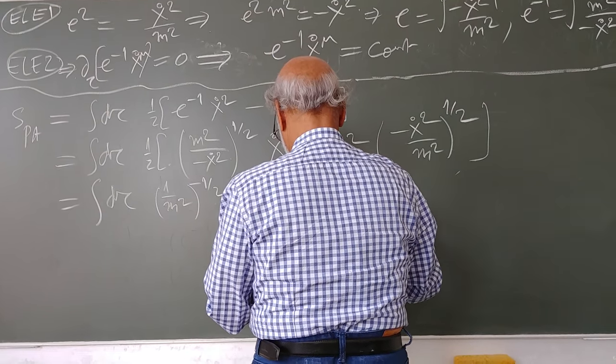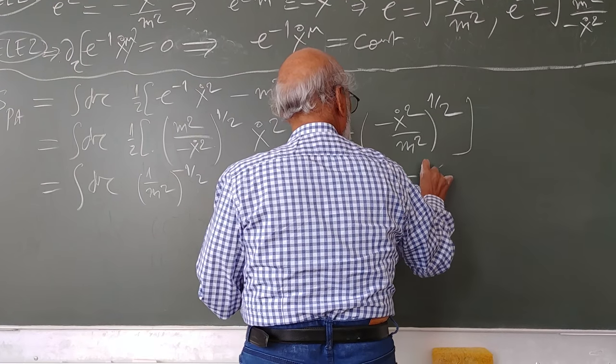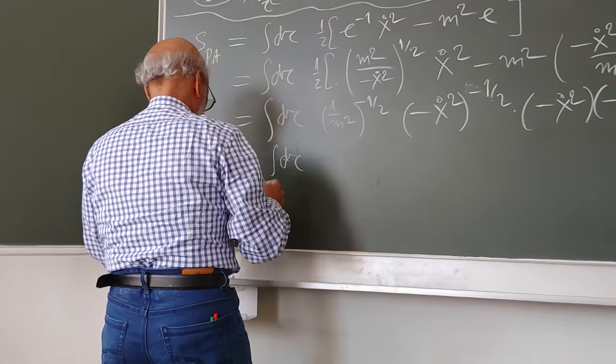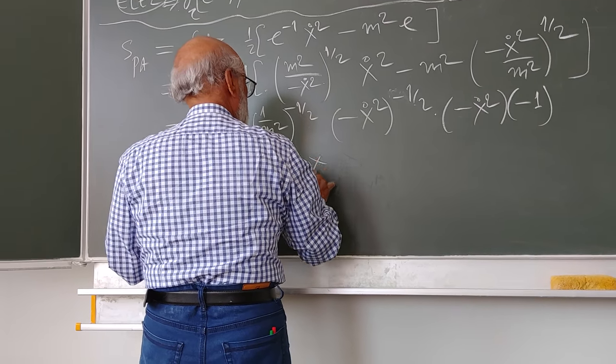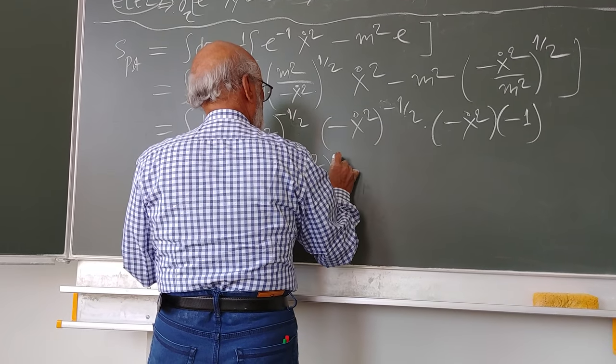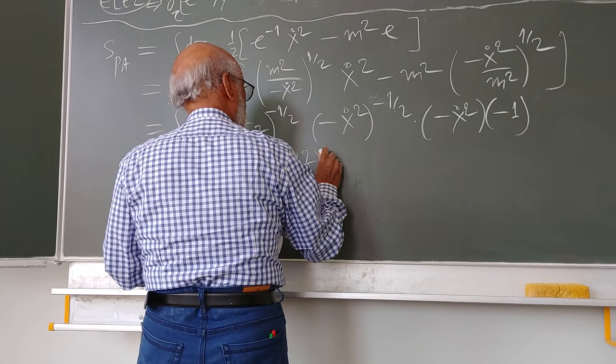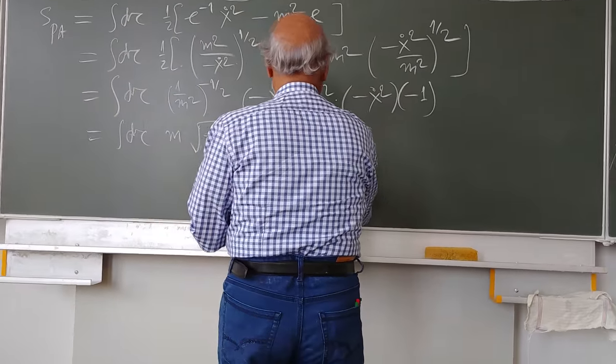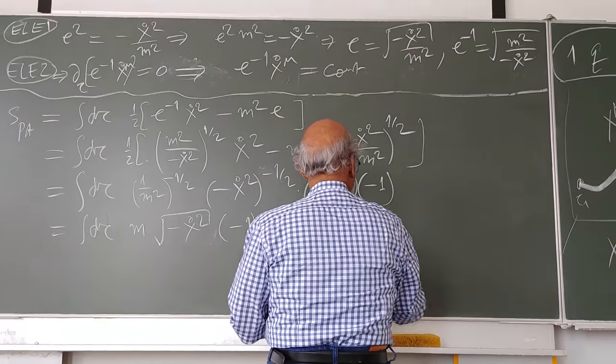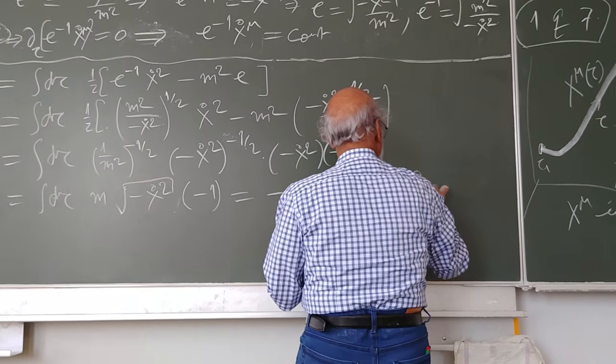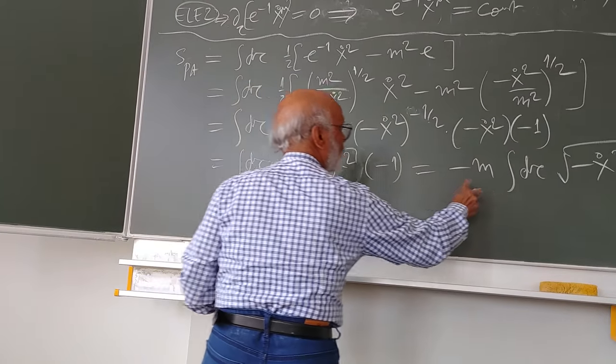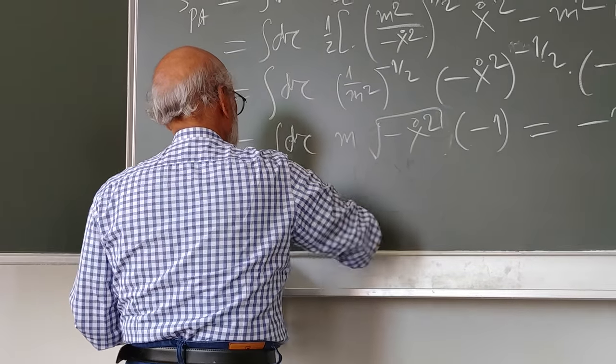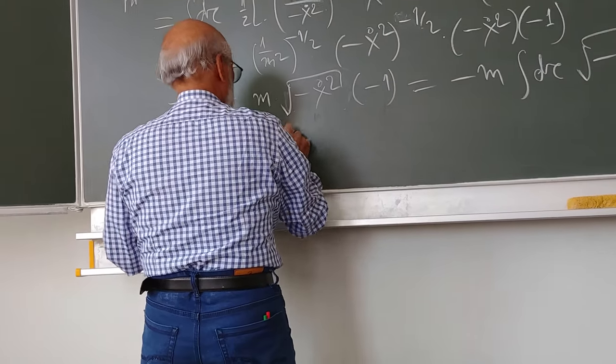I can add to this. I always use that. I put this. This can be written as d tau m times minus x dot e squared. If you like, I can already go to square root, one half into minus 1, so I can write it as minus m d tau.